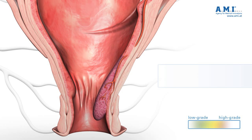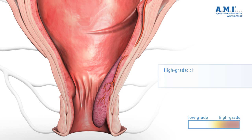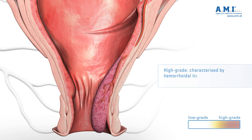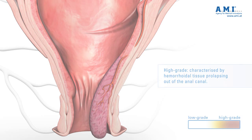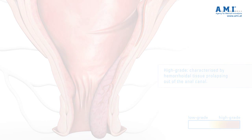High grades of hemorrhoids, that is grade three and four, are characterized by hemorrhoidal tissue prolapsing out of the anal canal, whereby grade three hemorrhoids can still be pushed back into position.